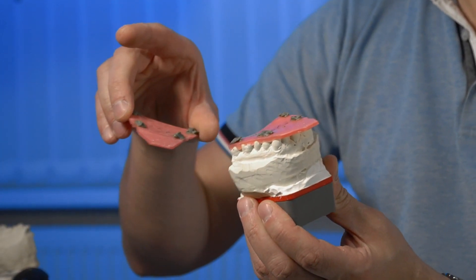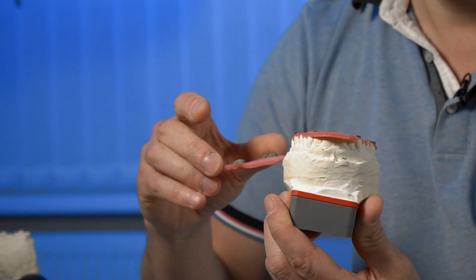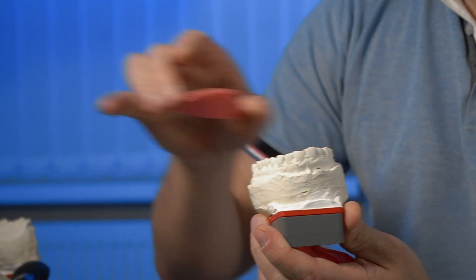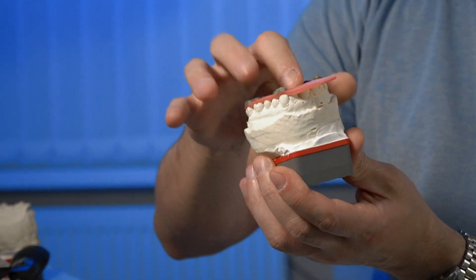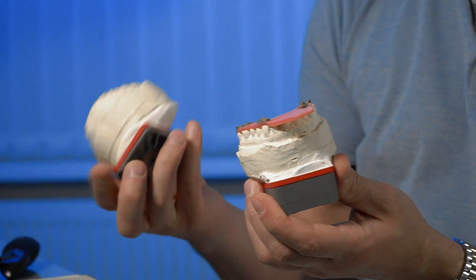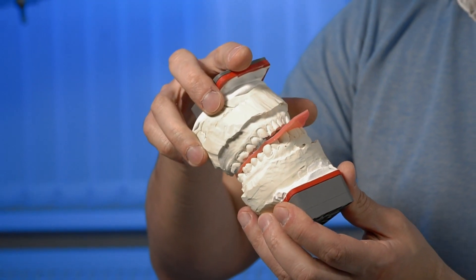You see, we have made one register. Here is the 3rd of February and here is the 5th. That is, today we made another register and we can check the position of the jaws. Let's just place the models in the articulator.